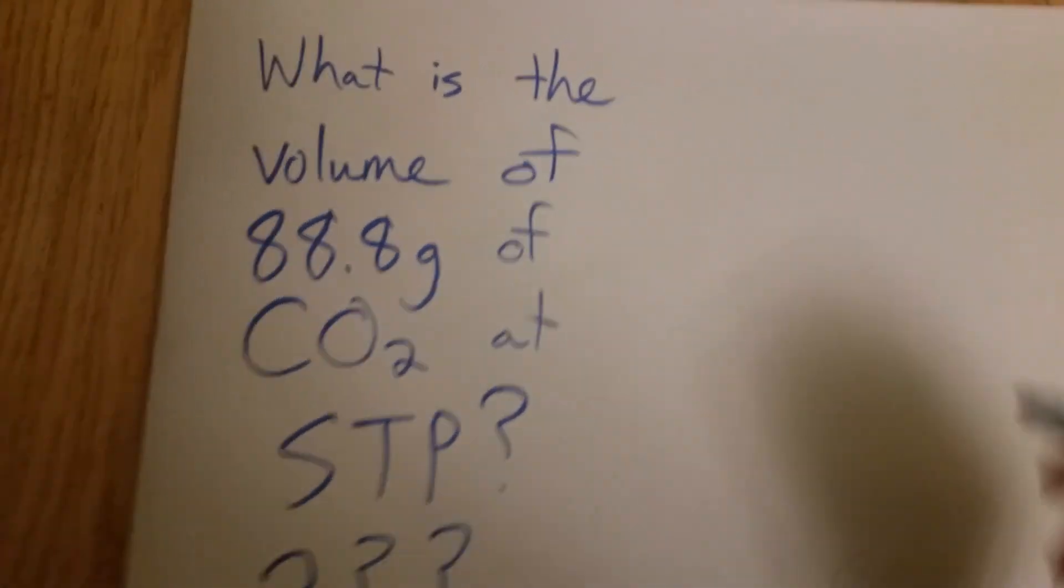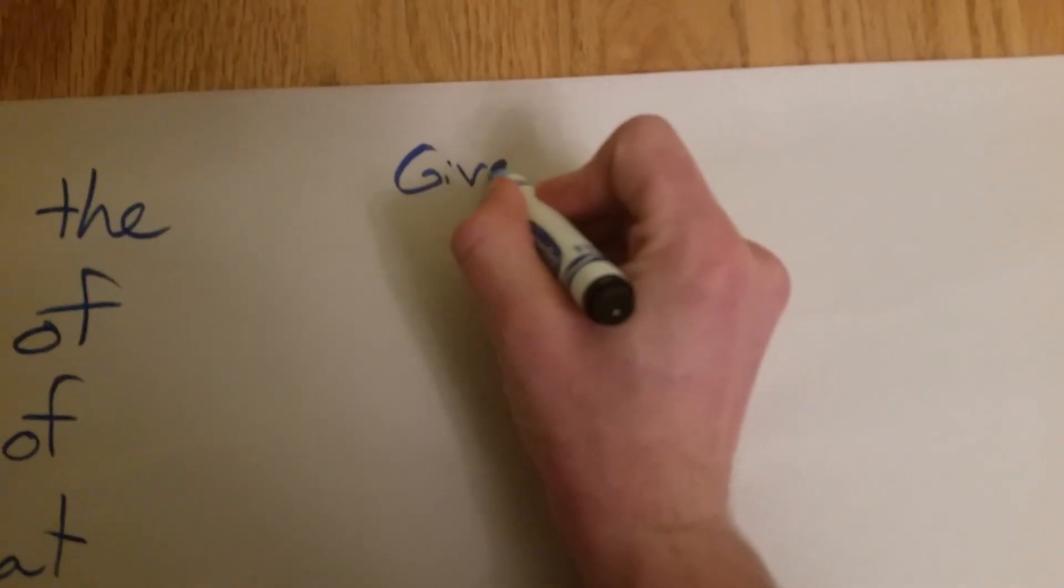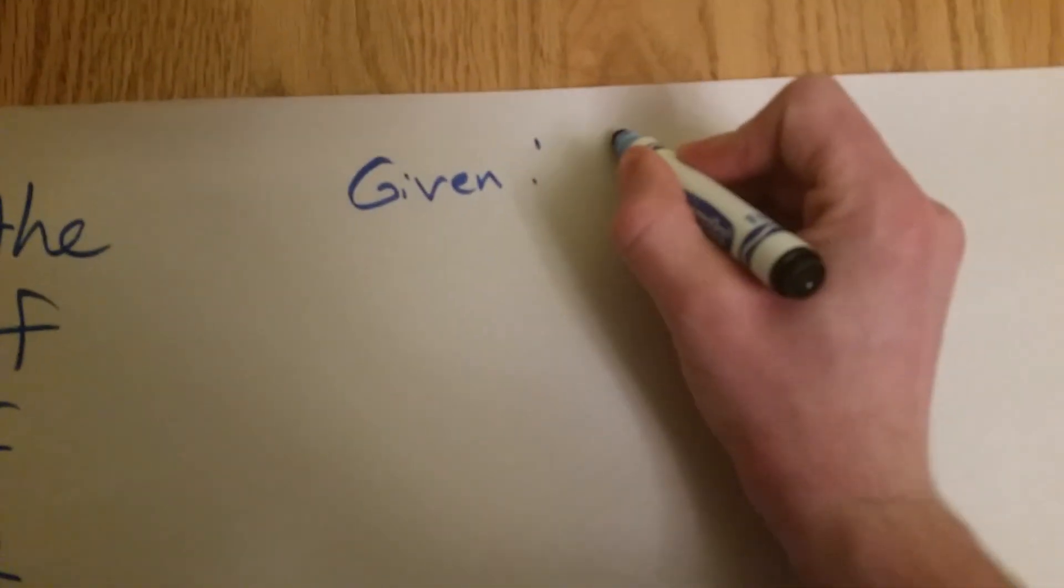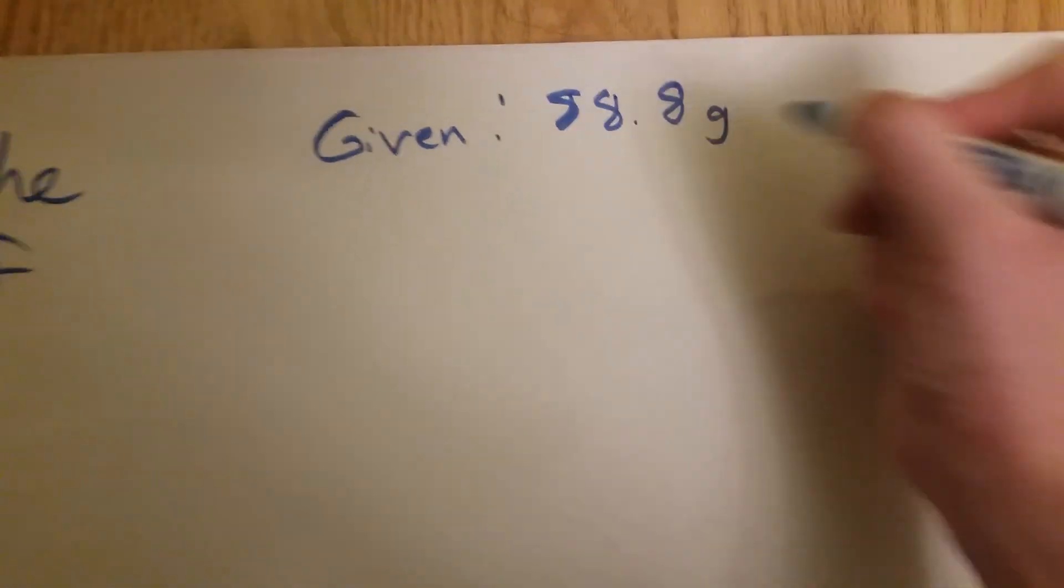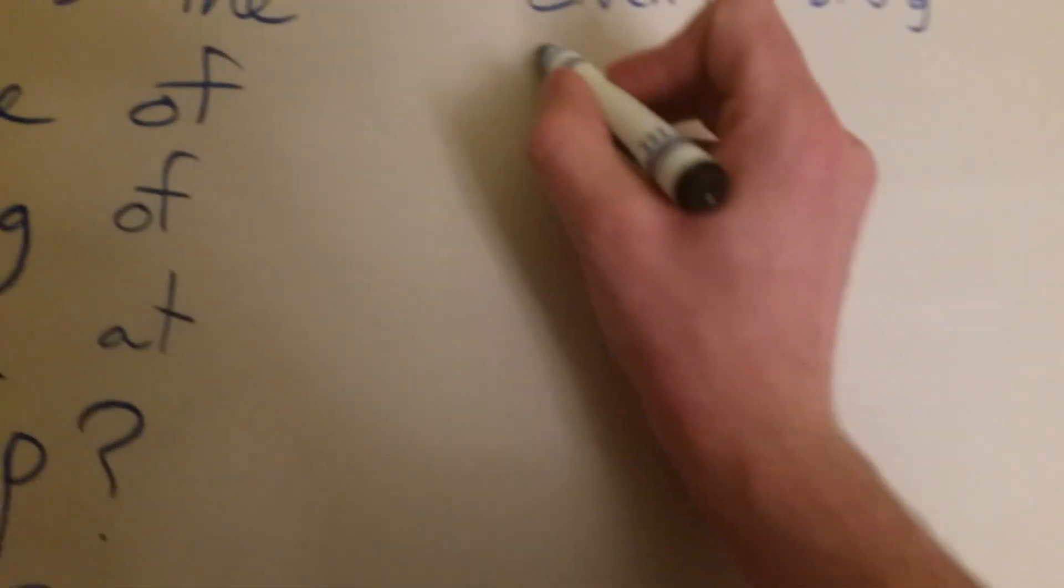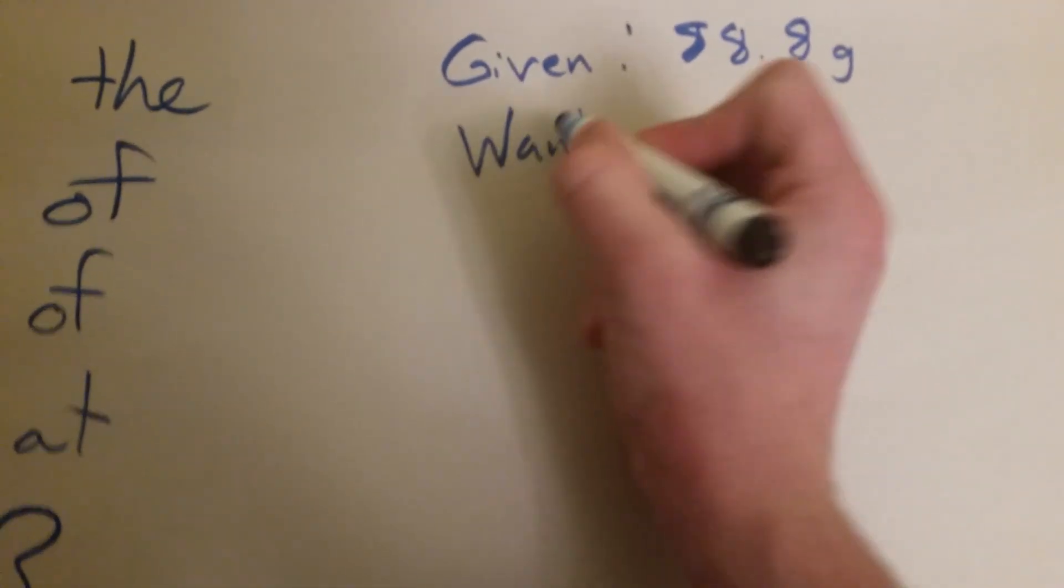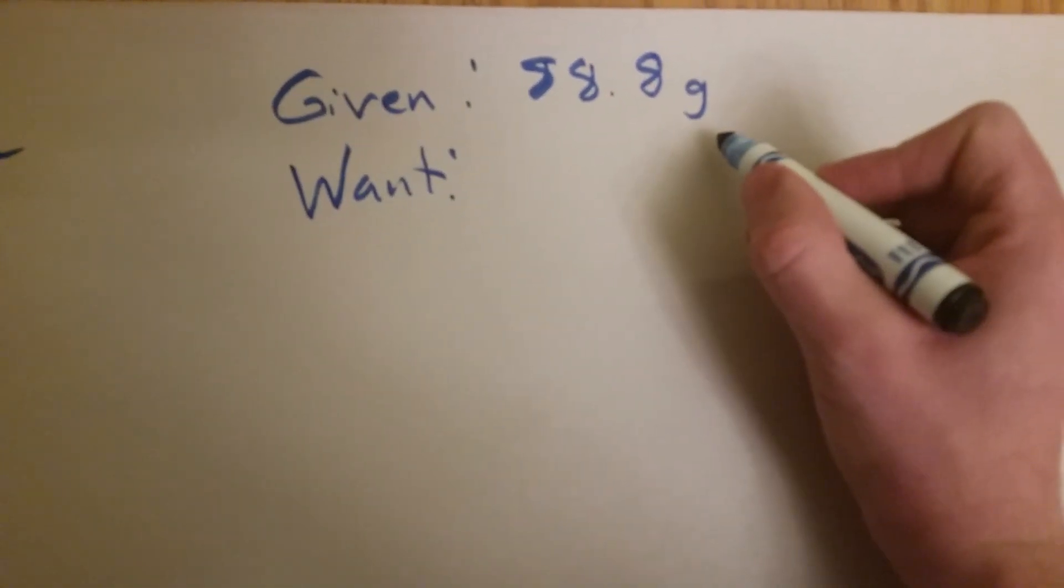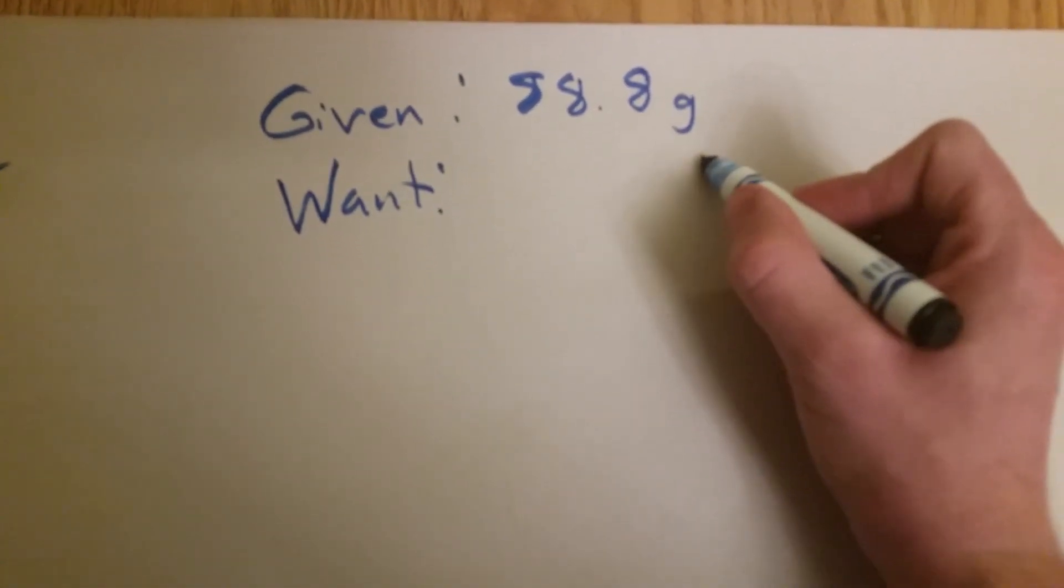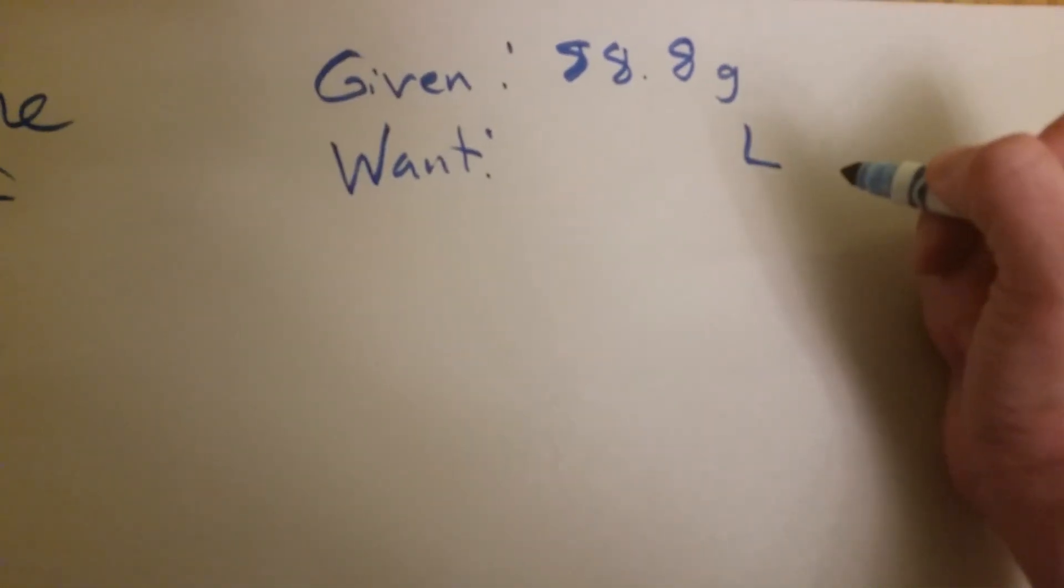Let's start out with what's our given? Yeah, our given is 88.8 grams. What do we want? We want, I guess, volume, and the unit for volume is liters. So let's figure it out.